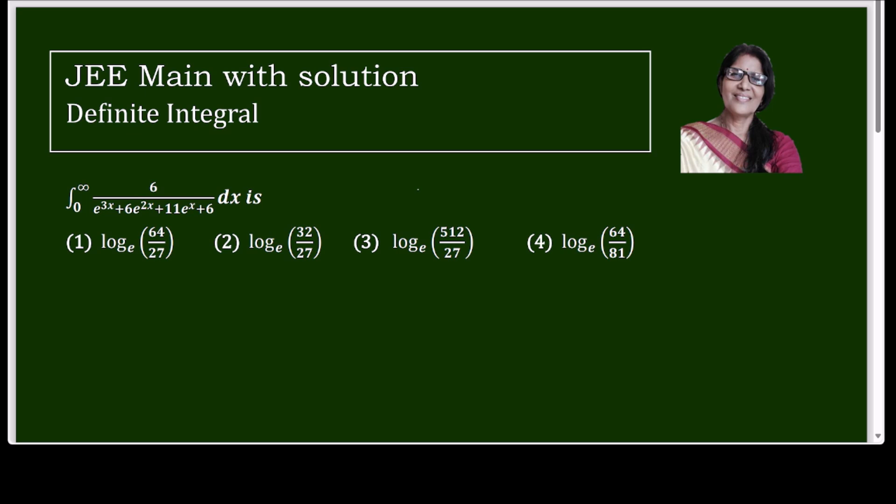Today on the screen you will find one question from definite integral: integrate from 0 to infinity of 6 over (e^(3x) + 6e^(2x) + 11e^x + 6) dx. The options are log(64/27), log(32/27), log(512/27), and log(64/81).